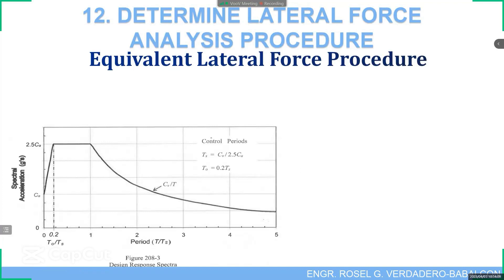This design response spectra has the x-axis as a ratio of the structure period over T sub S, with the formula shown here. On the y-axis is the spectral acceleration, ranging from CA as the minimum value to a maximum value of 2.5CA.